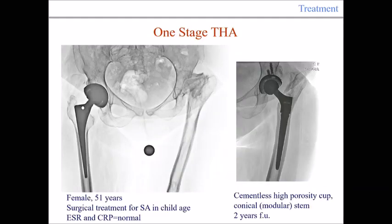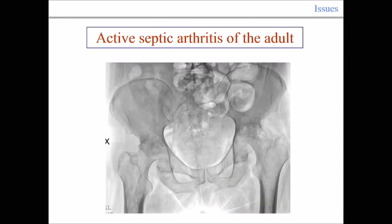Here is a case — a 51-year-old female. A standard total hip on one side; on the other side, a cementless implant with a high-porosity cup and conical modular stem. This is the two-year follow-up.